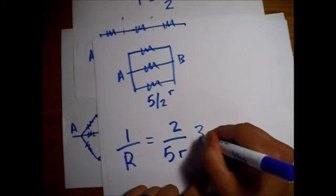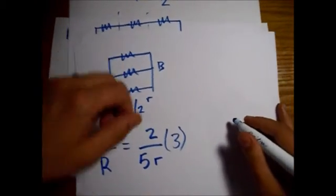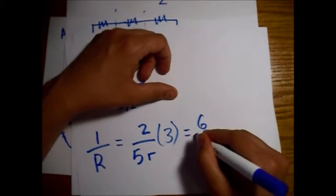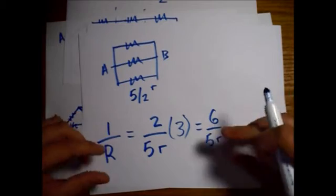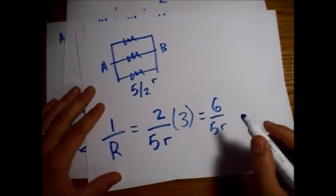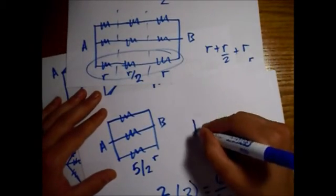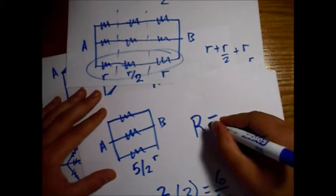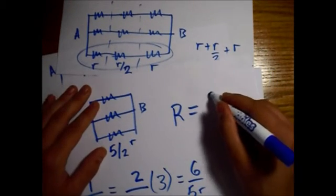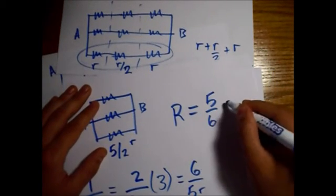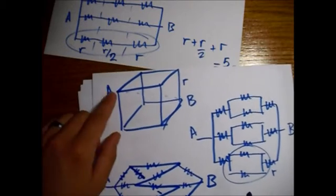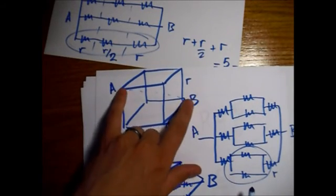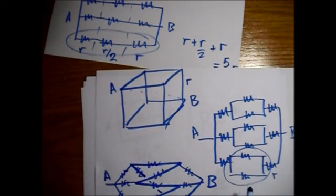All right? So, this is equal to six over five little R. Now we can just invert this and write it up here nice and big. We have our final equivalent resistance equal to five over six times little R. So, this is the resistance from point A to point B along the body diagonal of this cube.